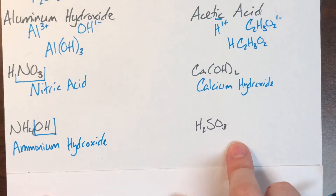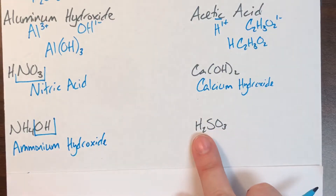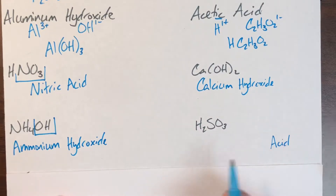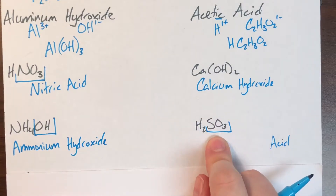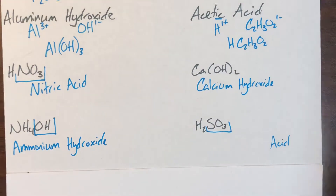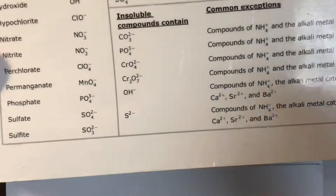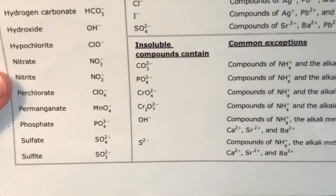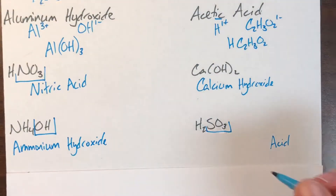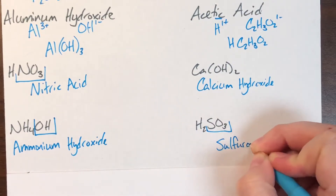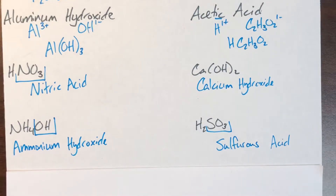H₂SO₃ is my next formula. I have a leading H, which means I need to end in 'acid.' This is not directly from the periodic table — it's a polyatomic ion — so I don't start with 'hydro.' I need to find SO₃ on my list of polyatomic ions. SO₃ is sulfite. The '-ite' ending turns to '-ous,' so this will be sulfurous acid.